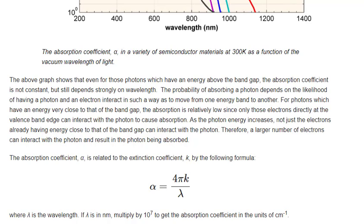The probability of absorbing a photon depends on the likelihood of having a photon and an electron interact in such a way as to move from one energy band to another. For photons which have an energy very close to that of the band gap, the absorption is relatively low since only those electrons directly at the valence band edge can interact with the photon to cause absorption.